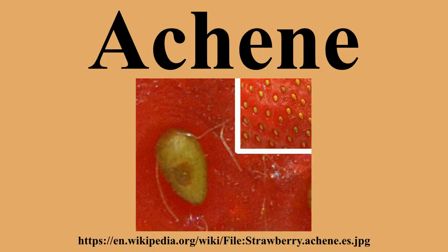In many species, what is referred to as the seed is actually an achene — a fruit containing the seed. The seed-like appearance is owed to the hardening of the wall of the seed vessel, which encloses the solitary seed so closely as to seem like an outer coat.